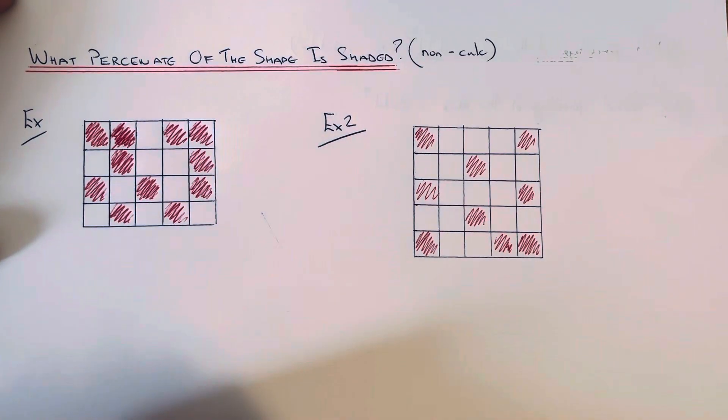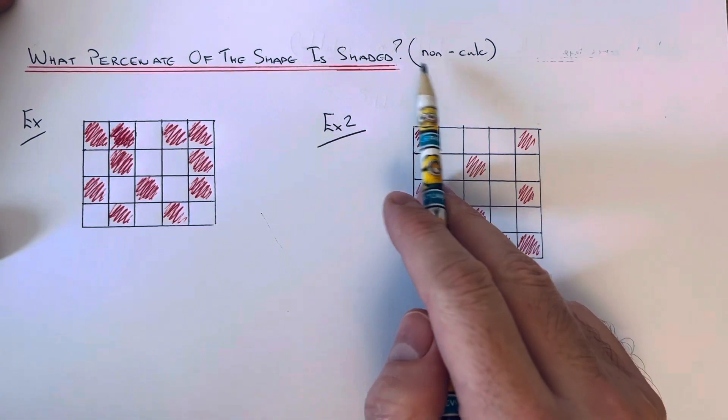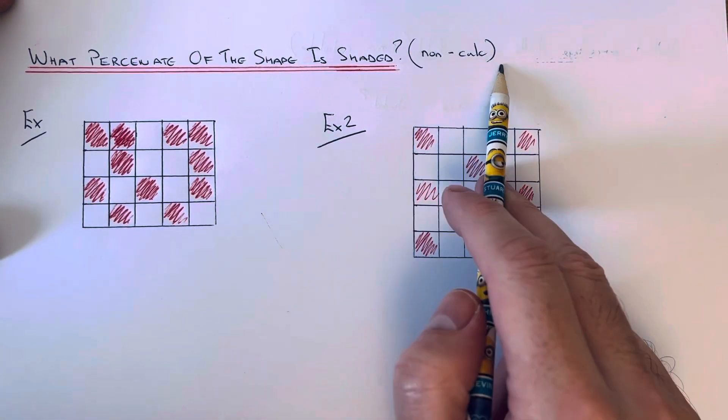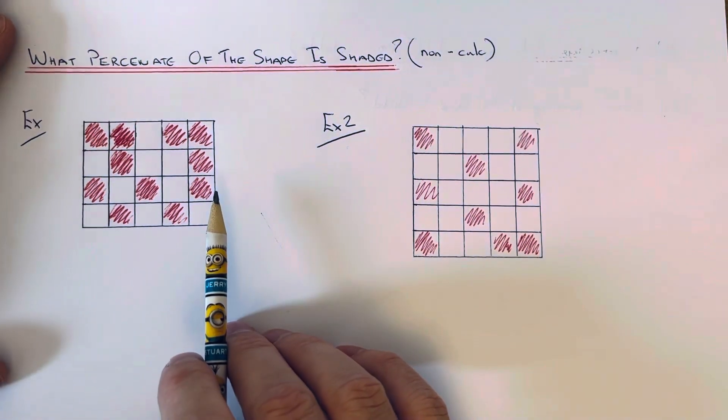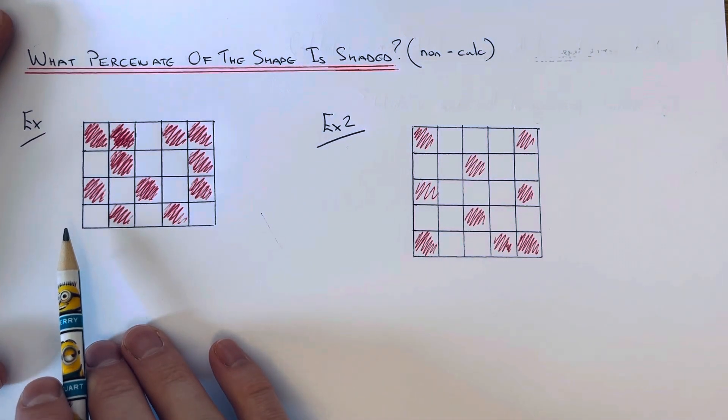Hi guys, welcome back. Today I'm going to show you how to work out the percentage of a shape which is shaded, and we're not going to use a calculator for this. Okay, so let's have a look at the first example. We're going to work out the percentage of the shape which is shaded red.